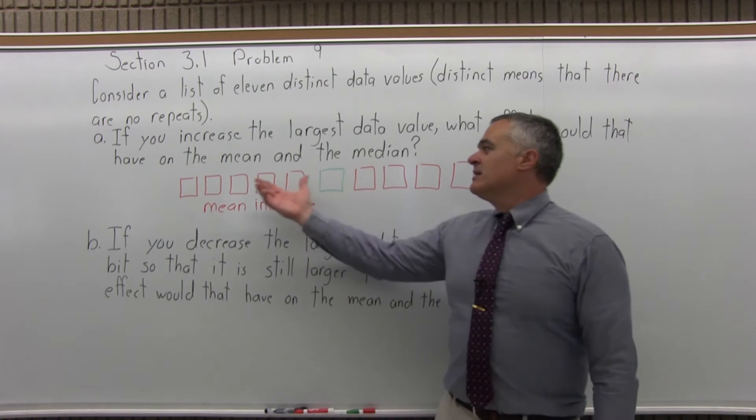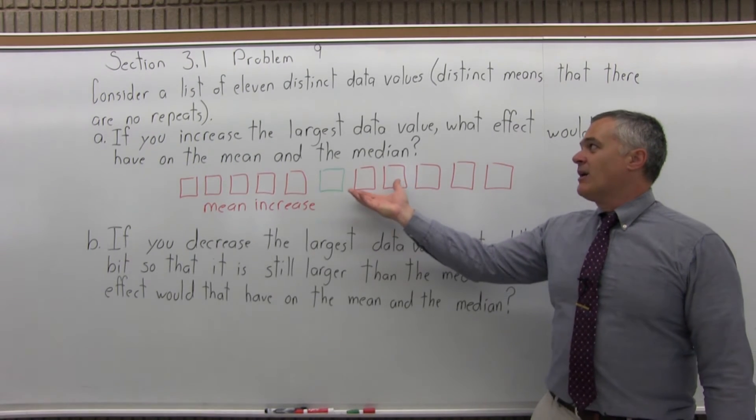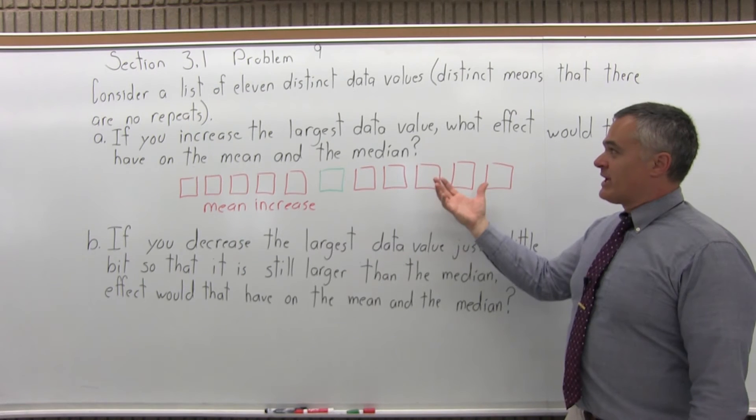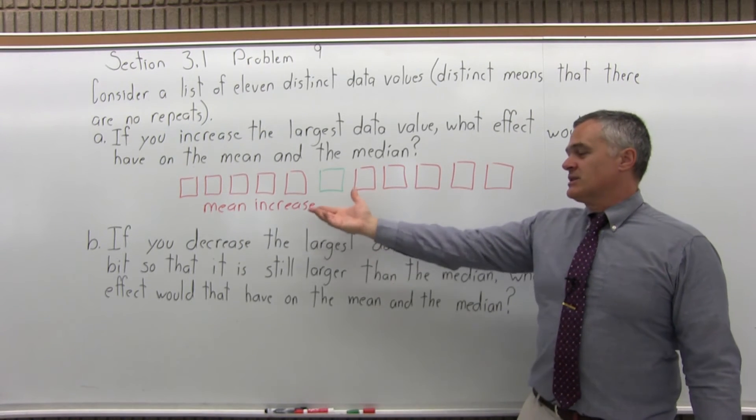Because you would find the mean by getting the total of all the data values and dividing by how many data values you have, in this case 11. That total getting bigger would make the answer for the mean bigger.